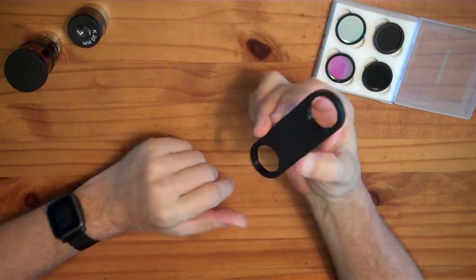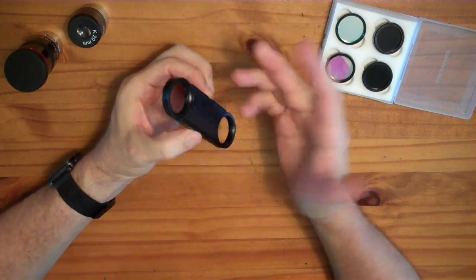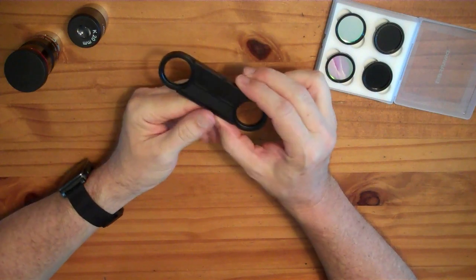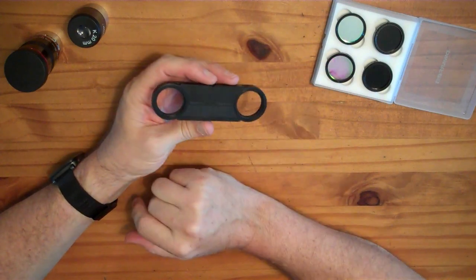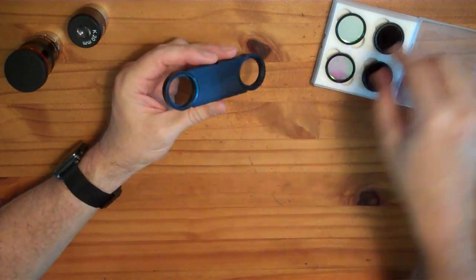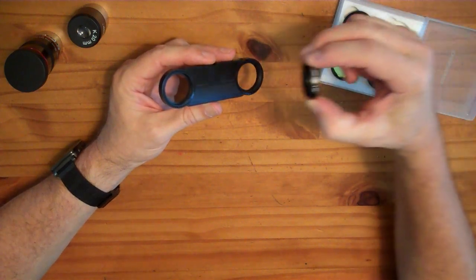So this is a Dorf Labs magnetically attached filter holder. It came with my Kickstarter Dorf telescope. If you buy the deluxe edition you get one of these along with some solar filters and so forth.